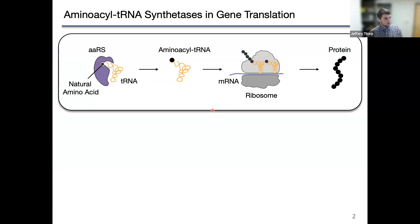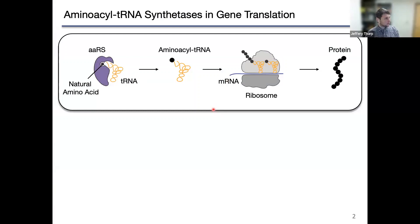I want to begin by giving a little bit of background. These first couple of slides I give every time I lecture on genetic code expansion. I considered taking them out for this talk since it's more of a specialized audience, but then it occurred to me that this is the Genetic Code Expansion for All webinar series, and so I didn't want to leave anyone out. This is an overview of translation. Aminoacyl tRNA synthetases are a group of enzymes responsible for recognizing natural amino acids and correctly attaching them onto their corresponding tRNA.